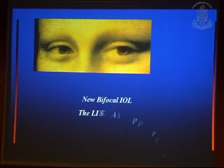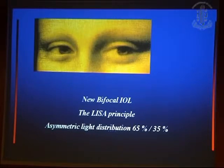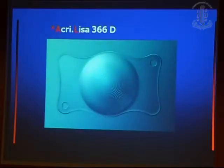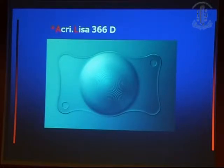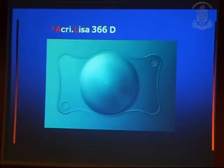The first lens I will discuss is the Giza, which is very popular now. It has a distribution of light of 65% for distance and 35% for near. It is in the shape of blade haptics — available in modified C in the past, now not available. It has got two holes and the lower haptic goes to the left of your side, whether you are doing right or left hand surgery. So you don't put it in reverse, because when you put it inverted, the dioptric difference is 2.5 diopters. So when you are putting this lens you have to put it properly.